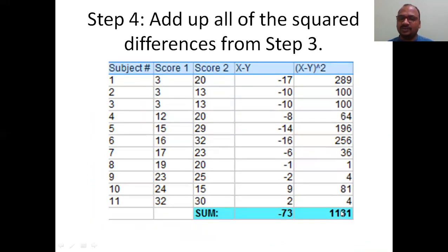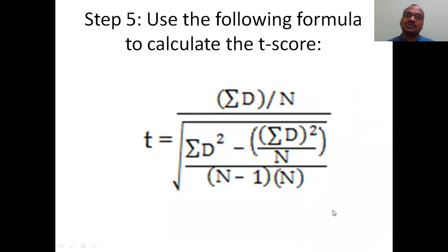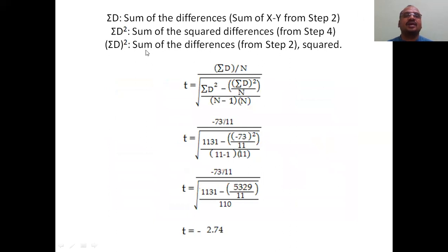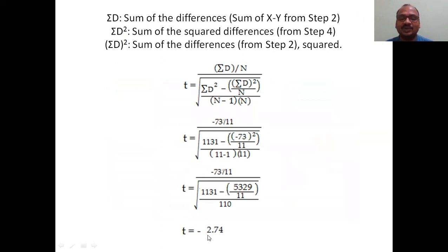Next, sum up the x minus y whole square values. Then use the following formula to calculate the t-score: summation of d divided by the square root of n times summation of d-squared minus (summation of d) squared, all over n minus 1. Here, Σd is obtained from the second step (sum of differences), and Σd² is the sum of squared differences from the fourth step. Finally, I got a calculated t-value of minus 2.74.